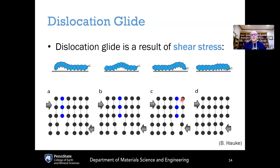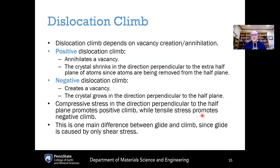One of the things to note about dislocation glide is that it is not changing the overall volume of the crystal. It's also not creating or annihilating vacancies. So dislocation glide is conservative from the point of view of vacancies — it's not changing the vacancy population — and also conservative from the point of view of volume.